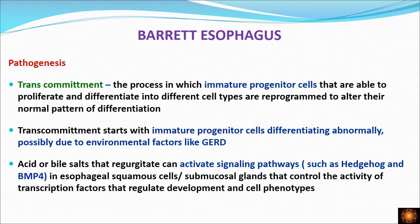Transdifferentiation is mature epithelium changing into another mature epithelium, whereas transcommitment is immature progenitor cells which are programmed to differentiate into one type but instead differentiate into another type of epithelium.